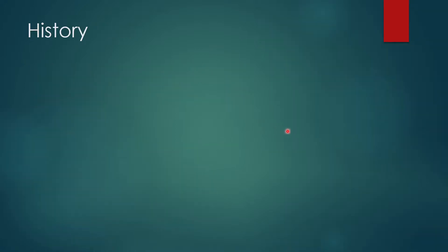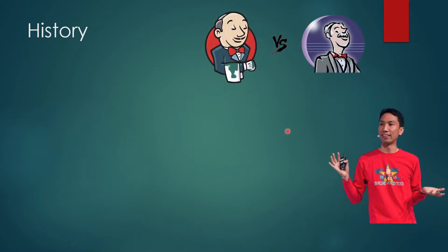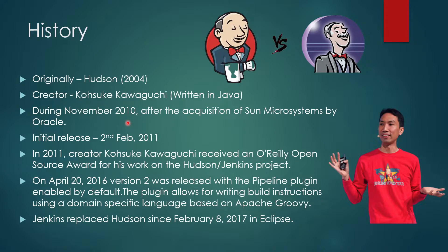Let's talk about the history. Jenkins was originally known as Hudson. If you can recognize the logo shown — that is the Jenkins logo, and we'll find out what the Hudson logo looks like. Jenkins was created by Kosuke Kawaguchi in 2004. It is written in Java.